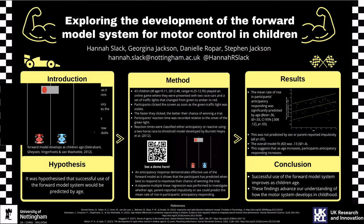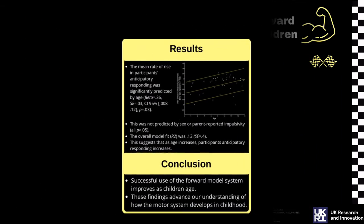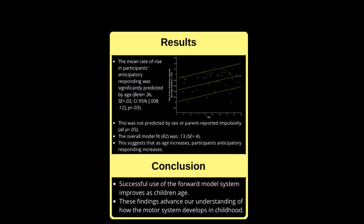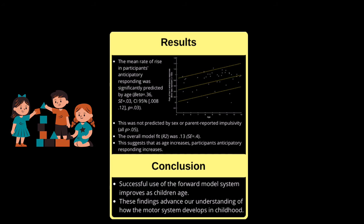Moving on to the results, the mean rate of rise in participants' anticipatory responding was significantly predicted by age and was not predicted by sex or parent-reported impulsivity. This suggests that as age increases, participants' anticipatory responding also increases.